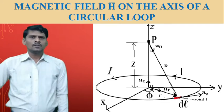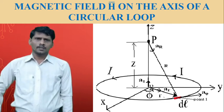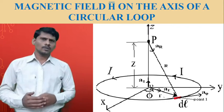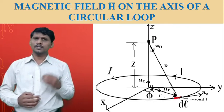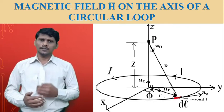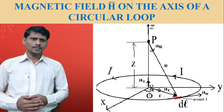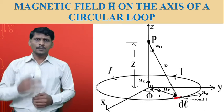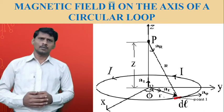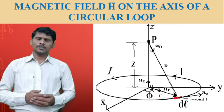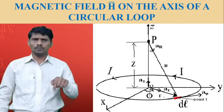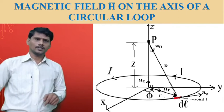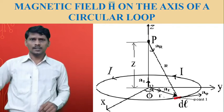Hi everyone. In the previous class we discussed about applications of the Biot-Savart Law. In this class we are going to discuss the next application: magnetic field intensity H bar on the axis of a circular loop. In the previous class we discussed magnetic field intensity at the center of the circular loop; now the application is to find magnetic field intensity on the axis of a circular loop.